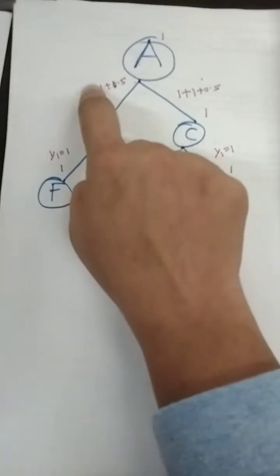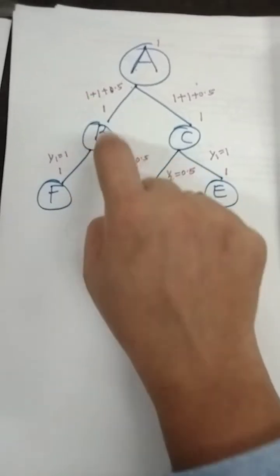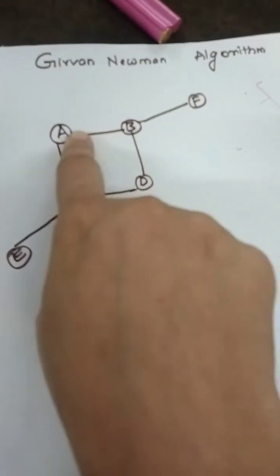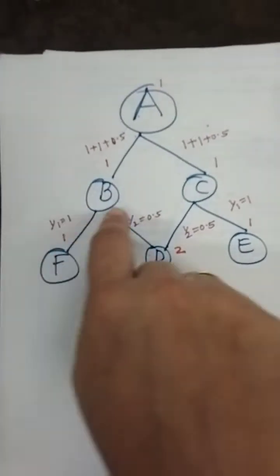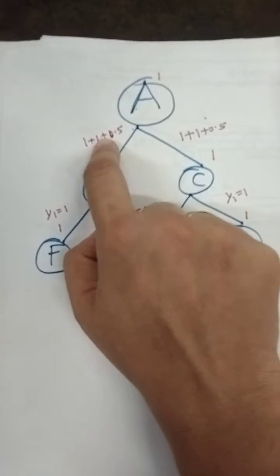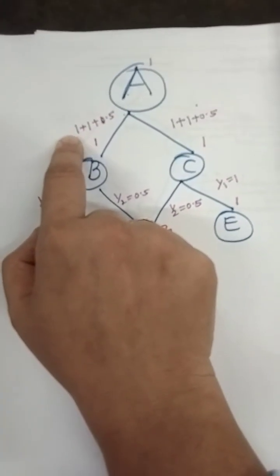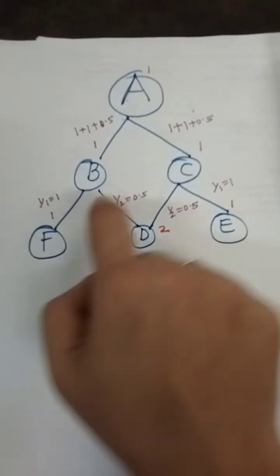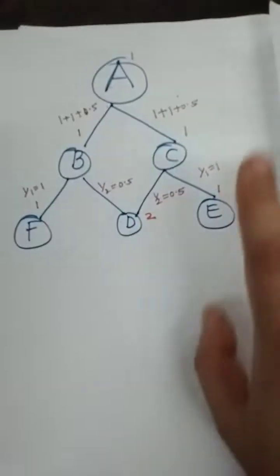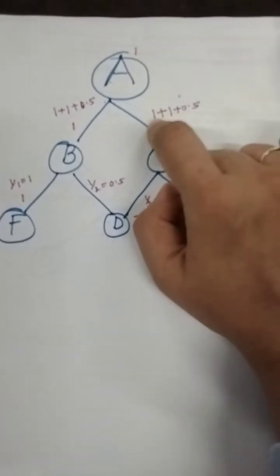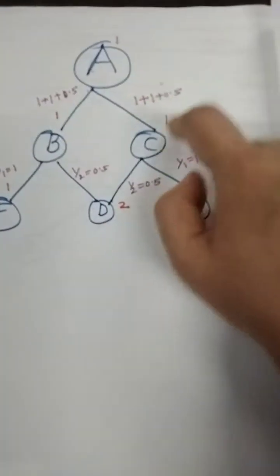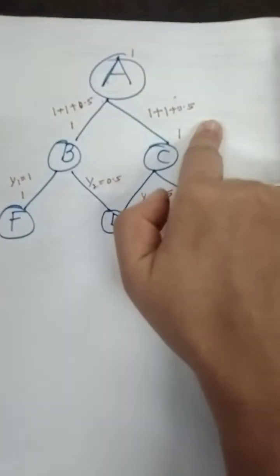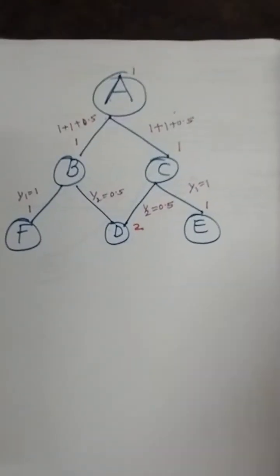For non-leaf nodes, the first edge weight is always one. Then you add however many lower-level edge weights pass through that node. For node B: the initial edge weight is 1, plus the lower edges — this is 1 and this is 0.5 — so 1 plus 1 plus 0.5 equals 2.5. Similarly, edge weight of C is also: first write 1, plus the lower edges 1 and 0.5, giving a total of 2.5.